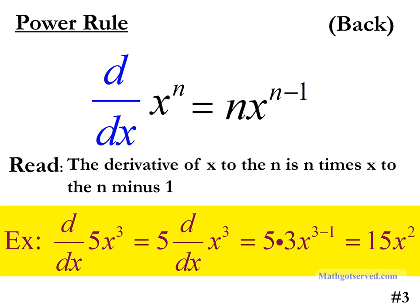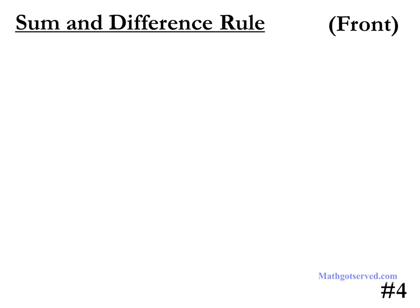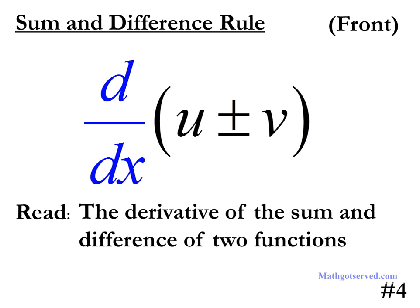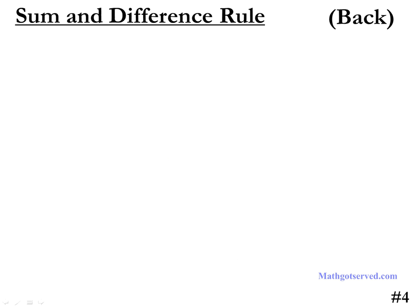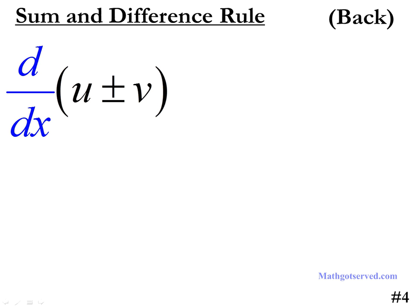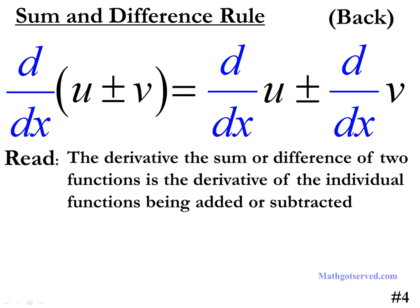As you deal with more and more complicated functions in calculus, you will often have to differentiate a function by making use of multiple rules. This is the sum and difference rule. It tells us that the derivative of the sum or difference of two functions is equal to the derivative of the first function u plus or minus the derivative of the second function v. That's basically what the sum and difference rule represents.